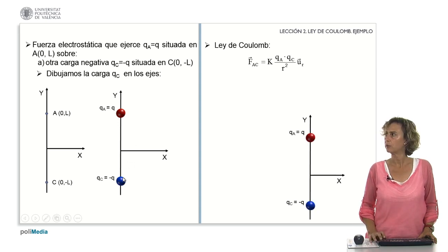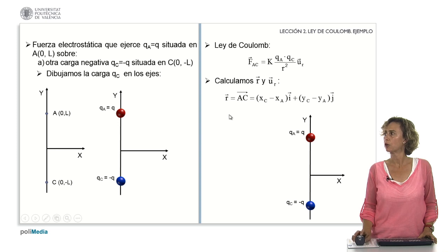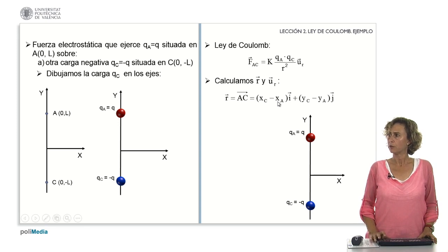We will calculate U sub R and R. R will be equal to the vector AC, which as we've already said will be coordinates of point C minus coordinates of point A. 0 minus 0, minus L minus 0, minus 2L, and so that vector will be minus 2L*j.